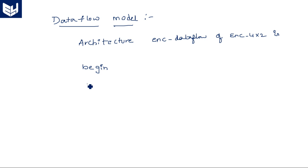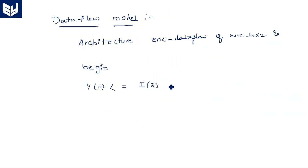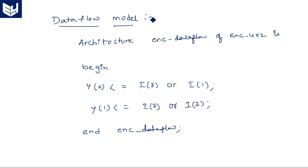So directly: Y(0) is assigned with I(3) OR I(1), and Y(1) is assigned with I(3) OR I(2). This is the simple data flow code written on the output boolean expressions. We can also write the same data flow model using conditional statements.